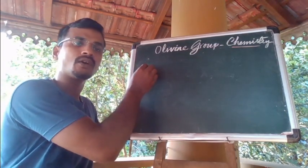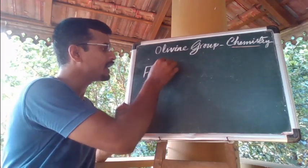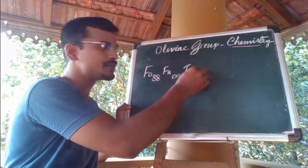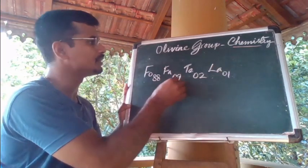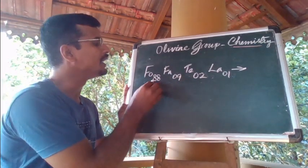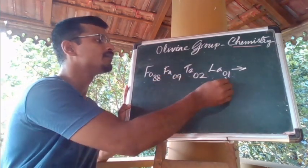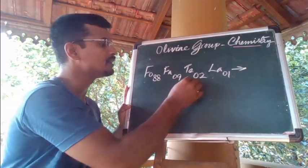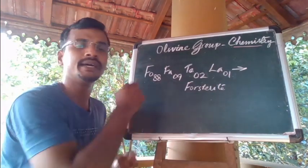For example, suppose you have a chemical composition of olivine having Fo 88, Fa 9, Te 2, and La 1 — all together it should be 100. You can see that the composition of this olivine has 88 percentage forsterite, 9 percentage fayalite, 2 percentage tephroite, and 1 percentage larnite. From this, you can see that it is a composition of an olivine rich in forsterite. The composition of the olivine group of minerals may be represented like this by their short forms.